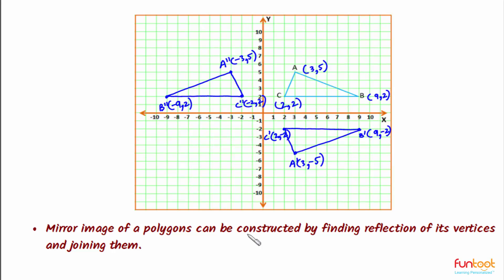The important point here is that the mirror image of a polygon can be constructed by finding the reflection of its vertices and joining them.